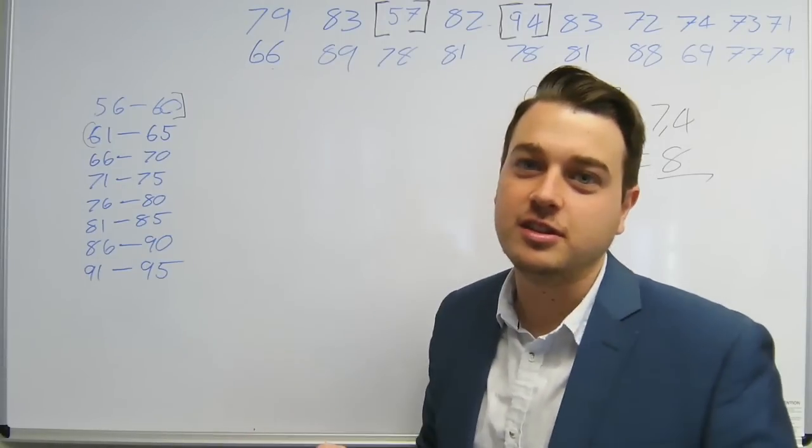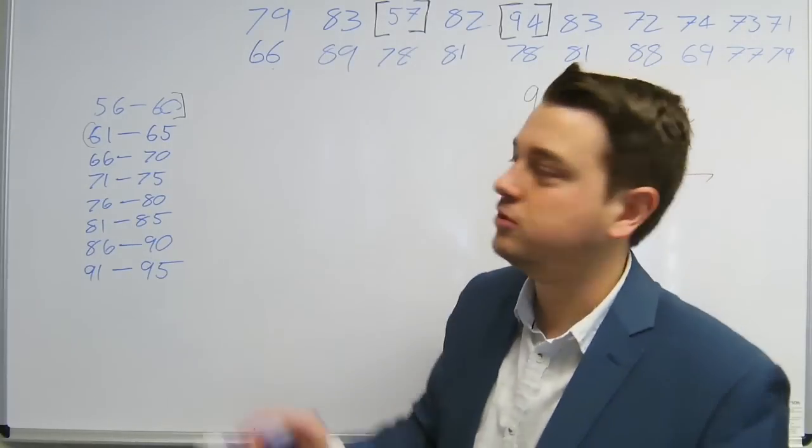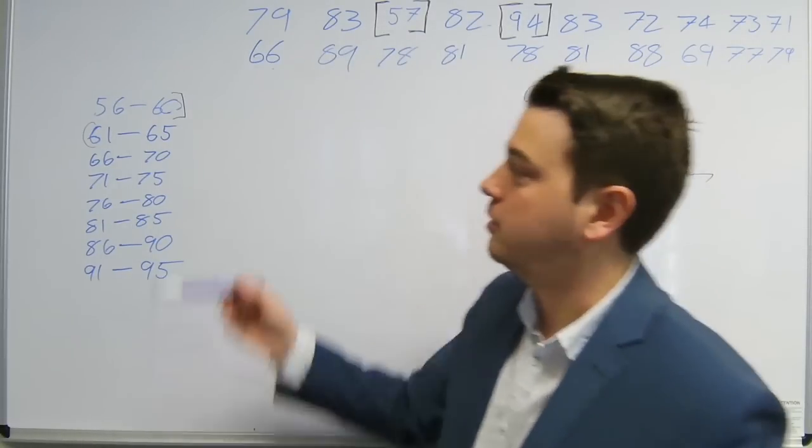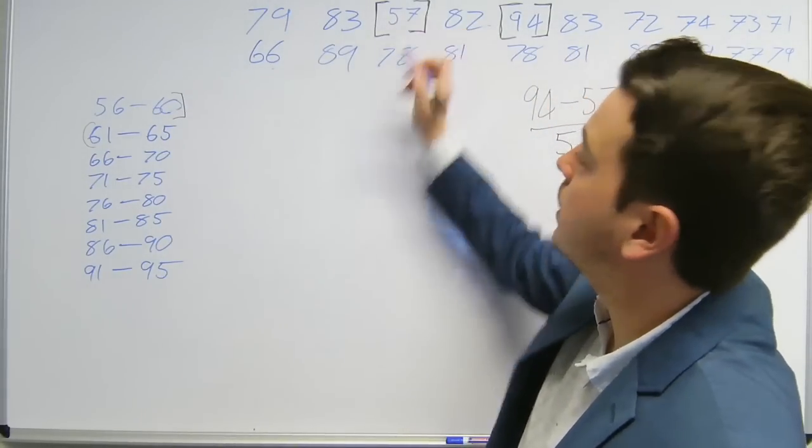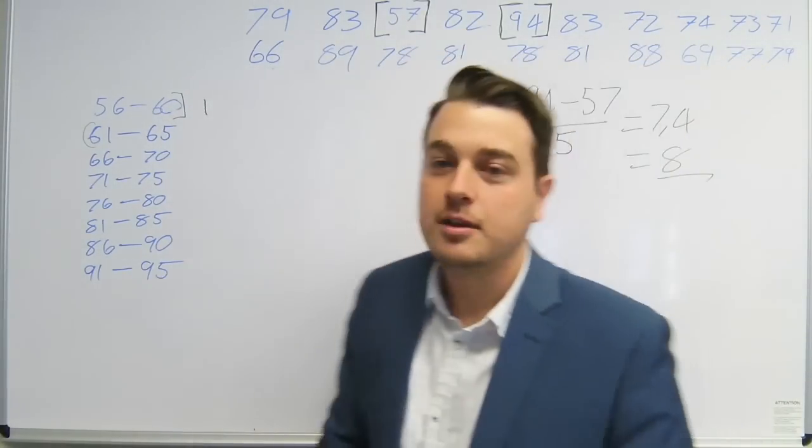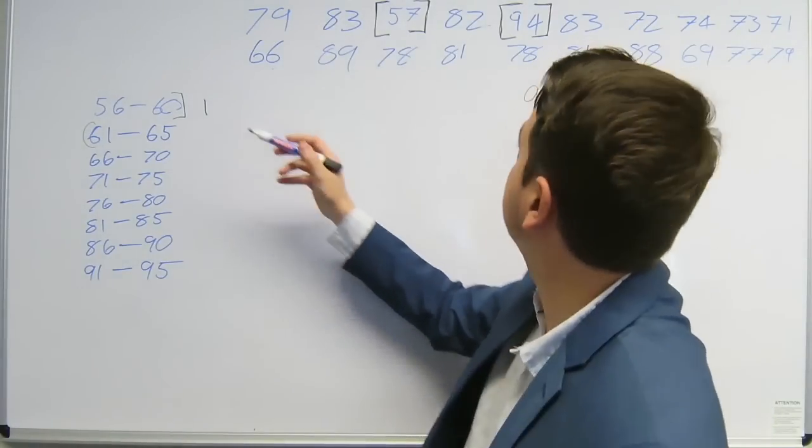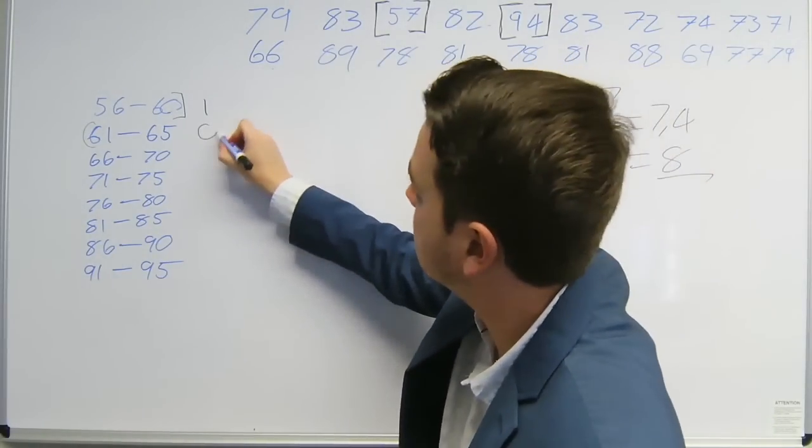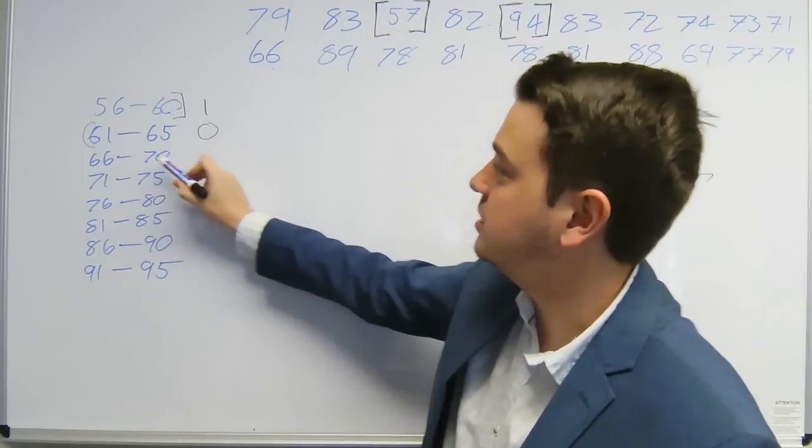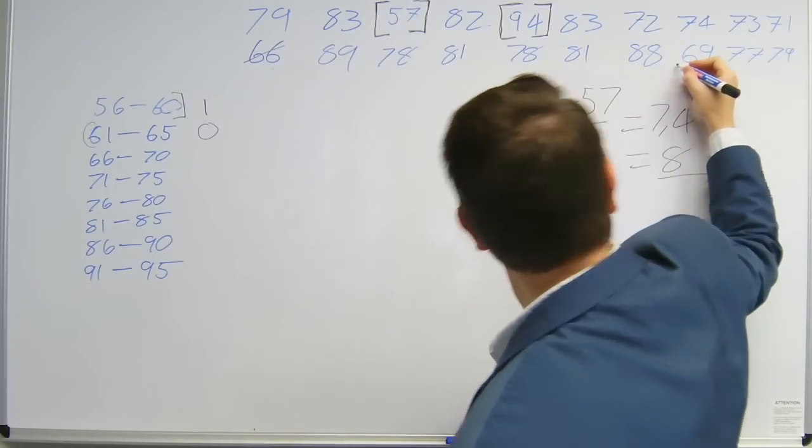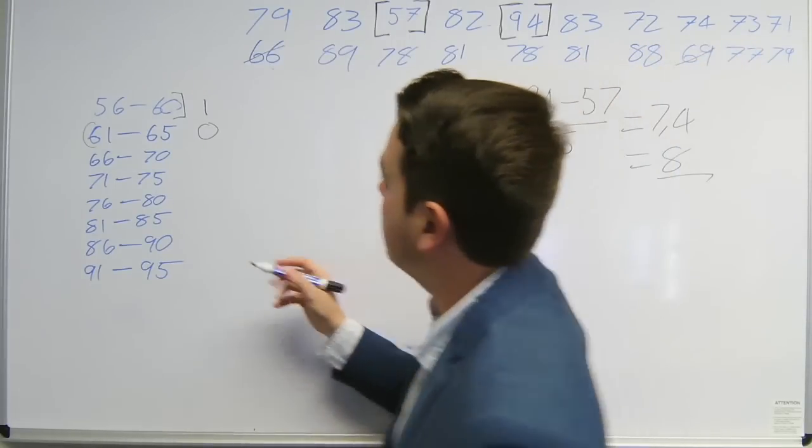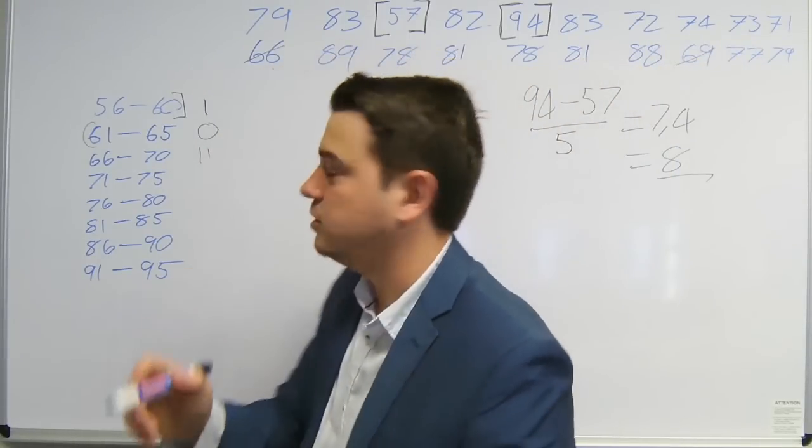Then we need to determine how this data is put into these bins, so basically you just count. Between 56 and 60, there was only one case. Between 61 and 65 there was zero cases. Between 66 and 70, you can go 66 and 69, and you count one, two.